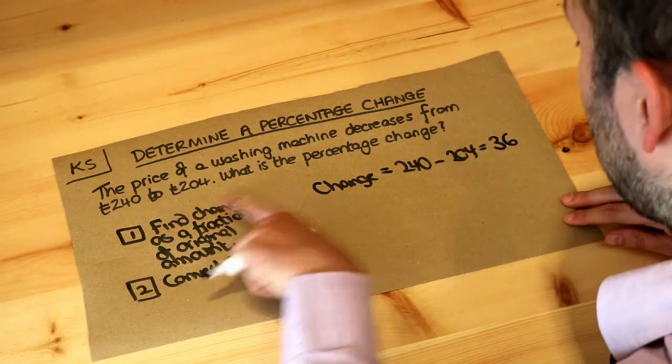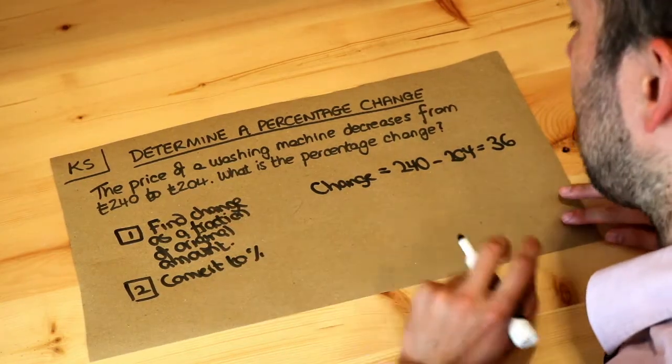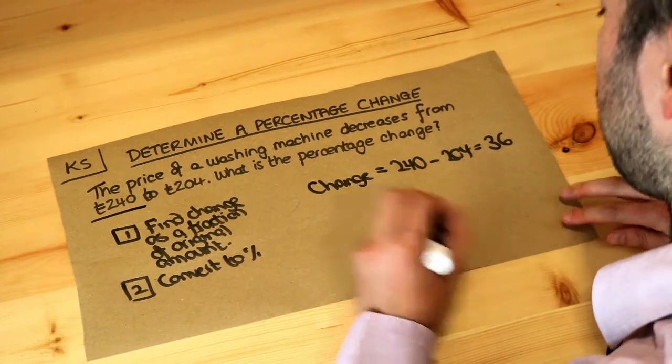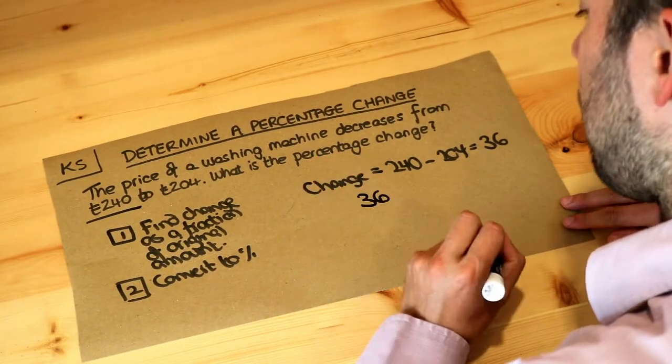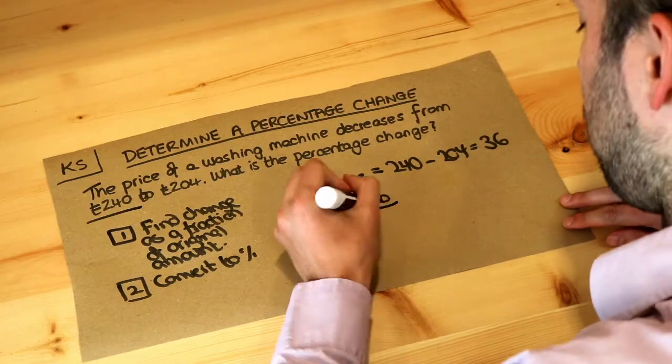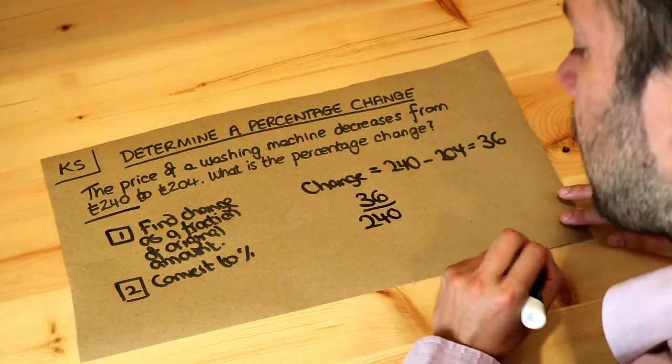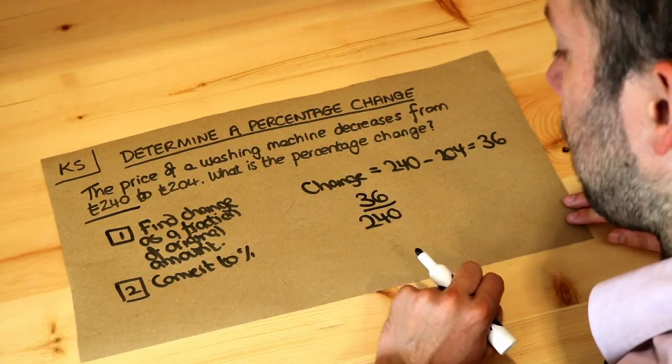And then we want to find that change, the £36, as a fraction of the original amount. The original amount is £240. So we do £36 as a fraction of the original amount of £240 and then we convert that fraction to a percentage.